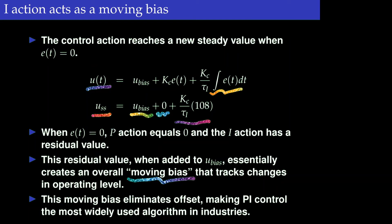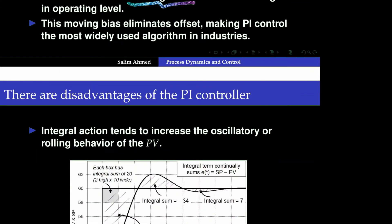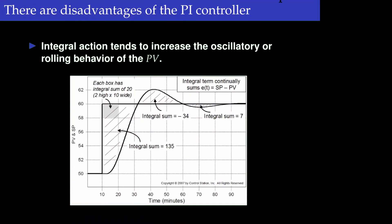When the system is at its initial steady value there is a bias term, but if the set point changes, the integral adds another term making the bias a moving bias — and that is how it eliminates the offset in the controller. The purpose of integral action is to eliminate the offset by adding this moving bias to the control action.